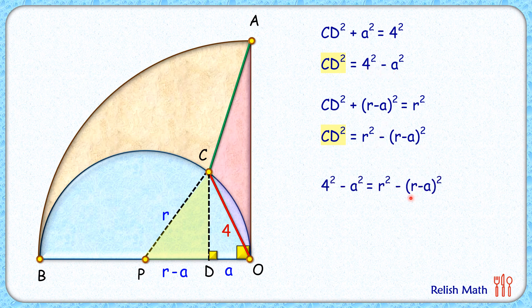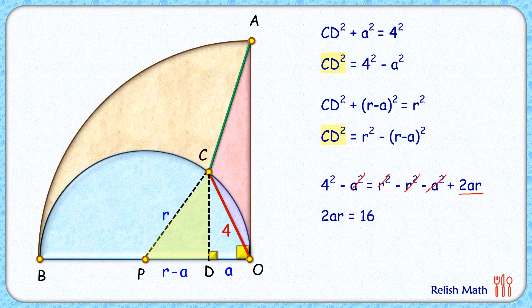Expanding the right-hand side using the (a − b)² identity, we find that r² and −r² cancel, and −a² cancels on both sides as well. From here we get 2ar = 16, or ar = 8.